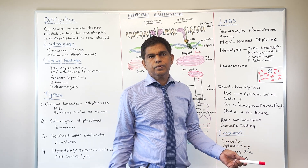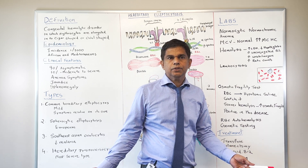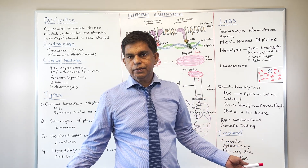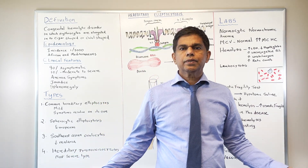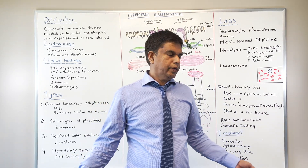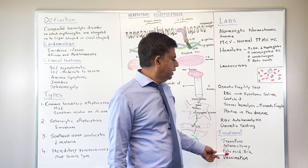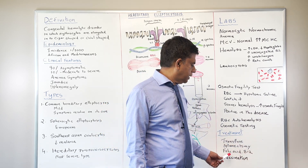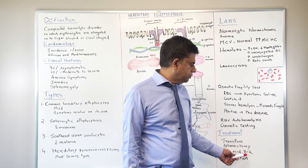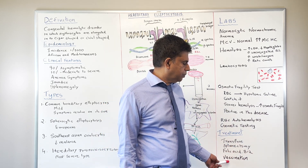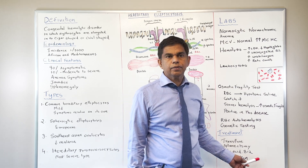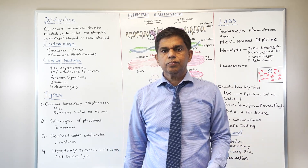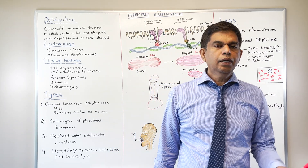For treatment: transfusion is needed when there is hemolytic anemia — the cutoff is hemoglobin of 7. Splenectomy is another option. Post-splenectomy, make sure you cover the patient with appropriate vaccinations; otherwise infections can become a serious problem.